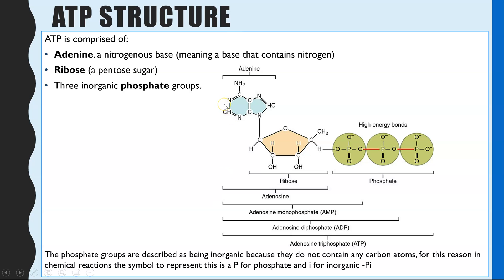The three components that ATP is made up of are: adenine, which is a nitrogenous base — meaning it's a base which contains nitrogen, and in this diagram you can see where the nitrogen is. It also has a pentose sugar, which means a five-carbon sugar, and we can count one, two, three, four, five carbons.